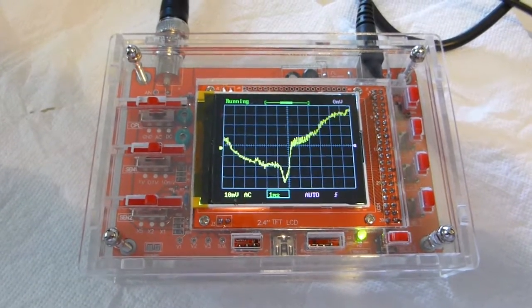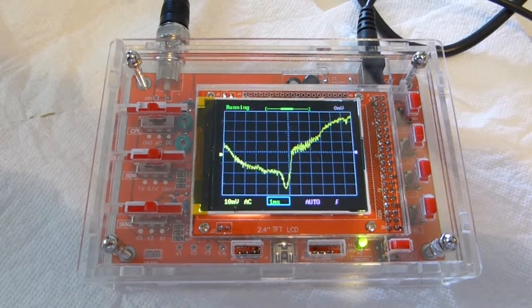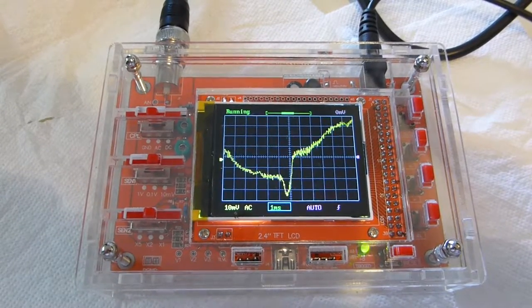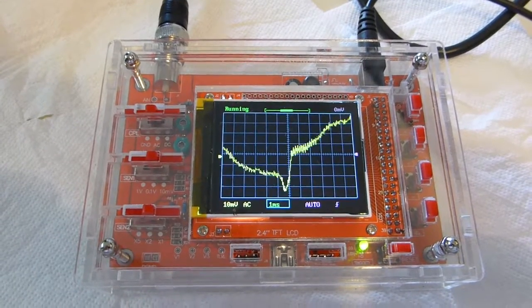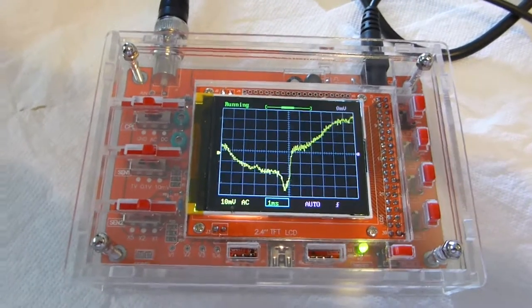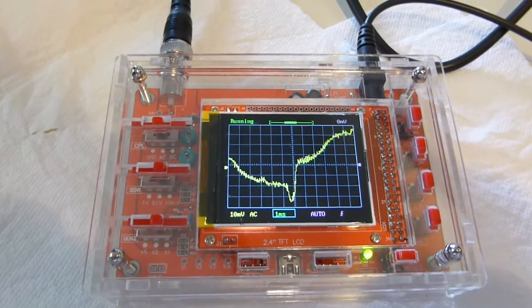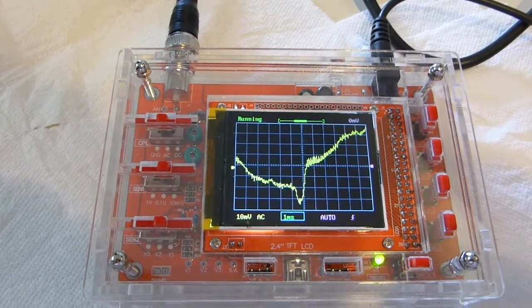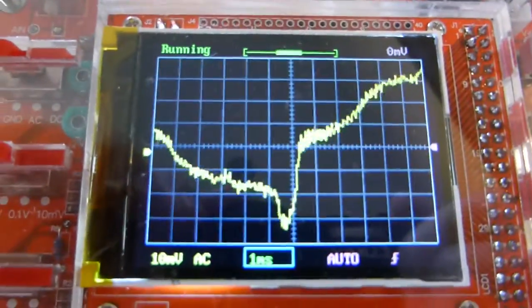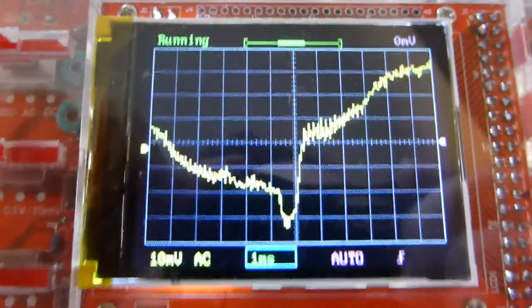So here is a $29 oscilloscope called a DSO-138. It comes in kit form and right at the moment it's picking up just a very low level AC hum just by sitting on the antenna.